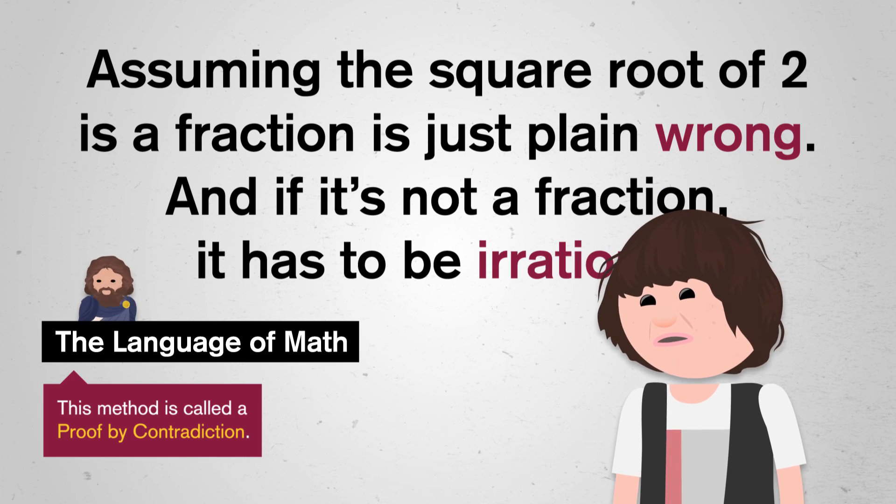Assuming the square root of 2 is a fraction is just plain wrong. And if it's not a fraction, it has to be irrational. Whoa! Phew! We're still alive. So we've just seen it for ourselves. The square root of 2 is an irrational number, and its decimal expansion will never repeat.